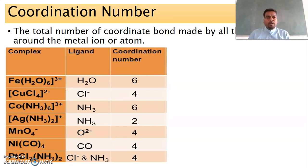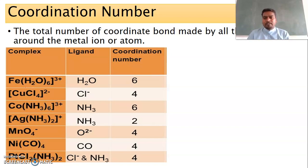If a complex contains monodentate ligands, it is very easy — the number of monodentate ligands equals the coordination number. For example, if a complex has six water molecules, water is a monodentate ligand, so the coordination number is six. And in a tetrachloro complex, four monodentate chloro ligands are present, so the coordination number is four.